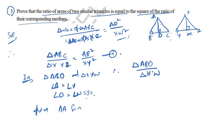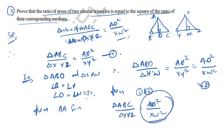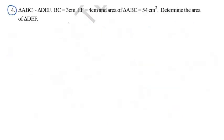From similarity of triangles ABD and XYW: area of triangle ABD / area of triangle XYW = AD² / XW². Combining with the earlier result, area of triangle ABC / area of triangle XYZ = AD² / XW². This is what we needed to prove — the ratio of areas equals the square of the ratio of corresponding medians.